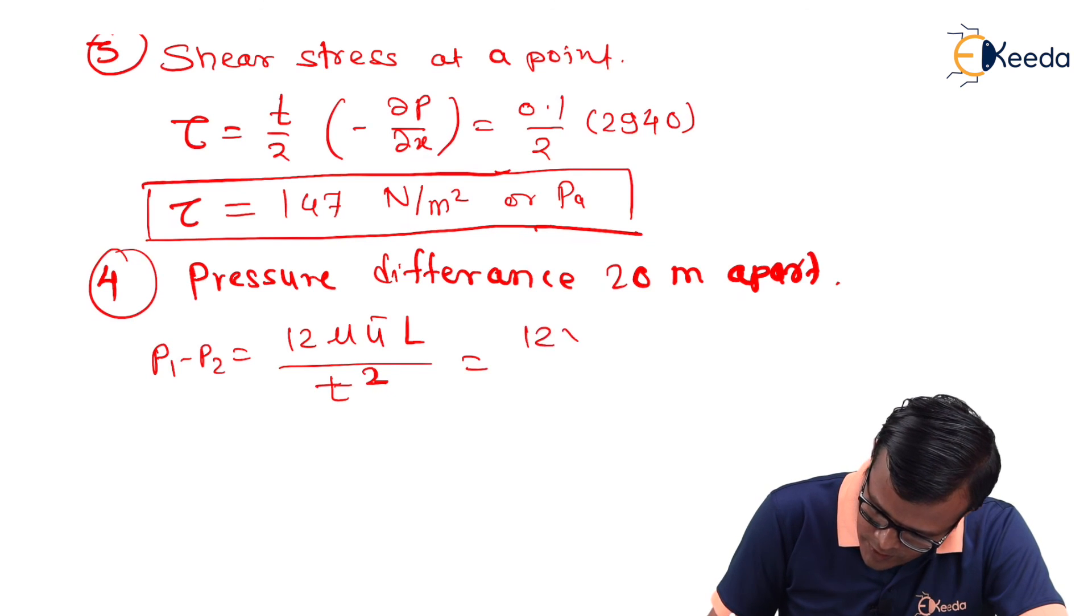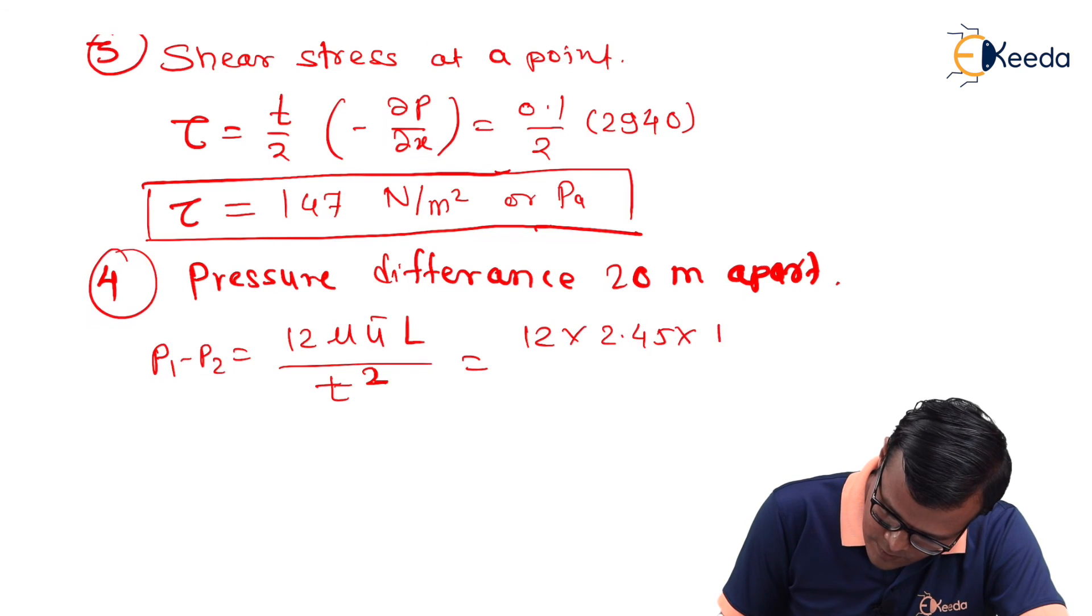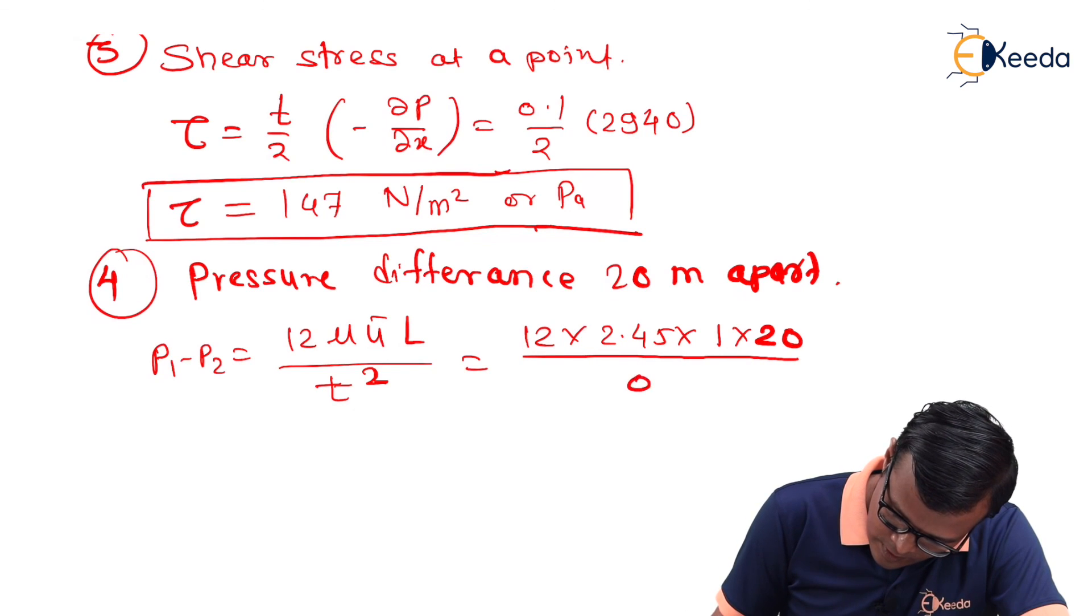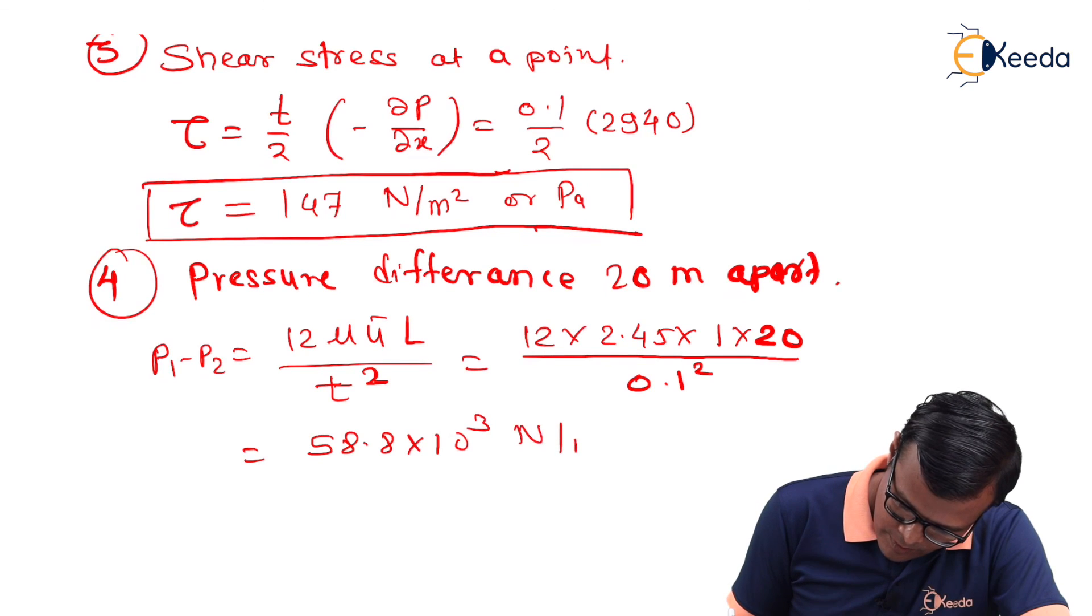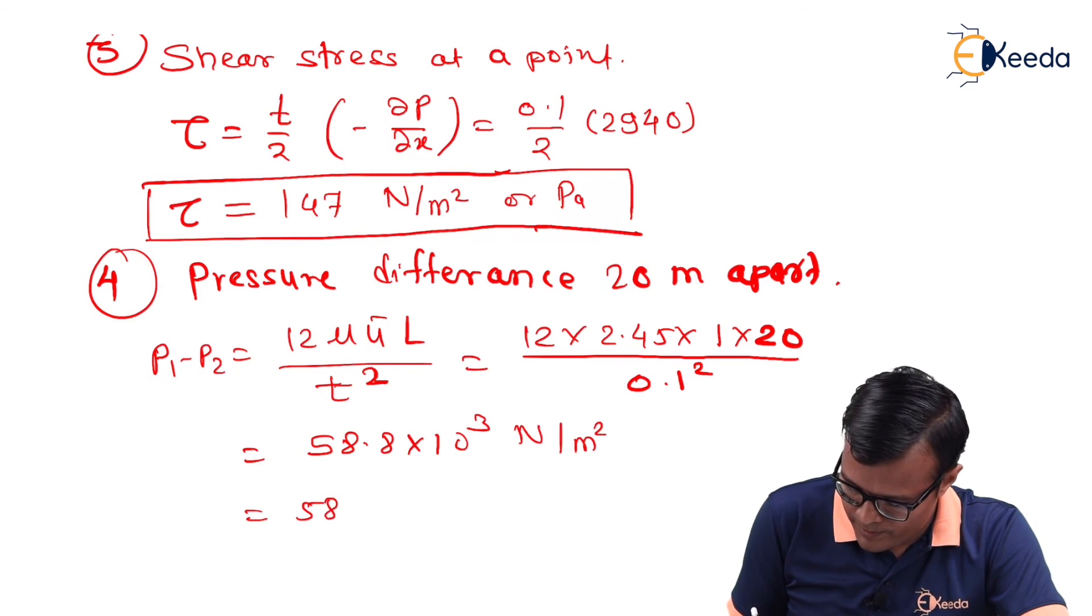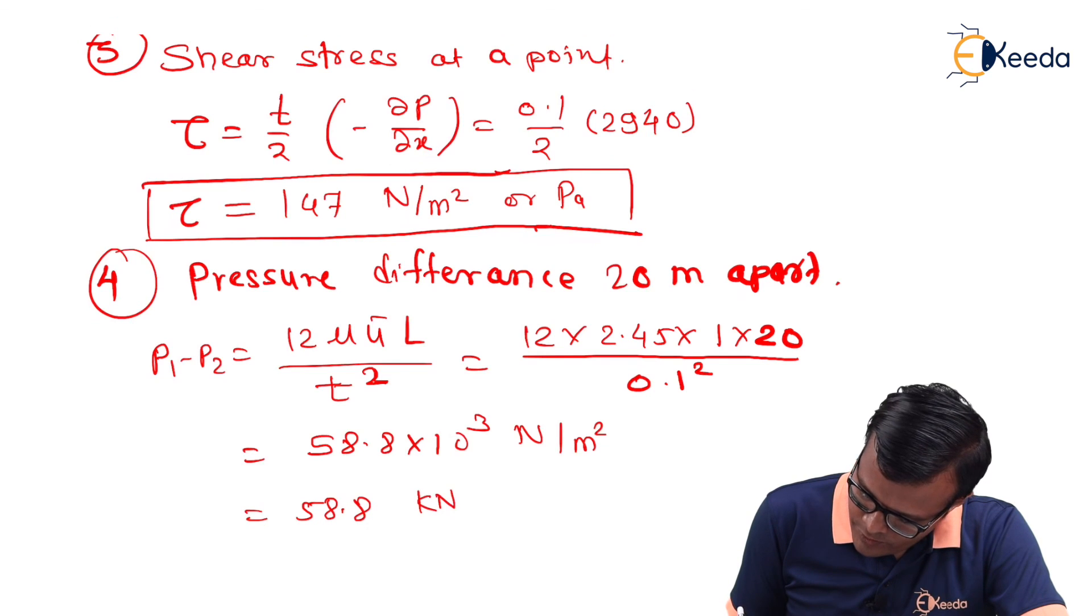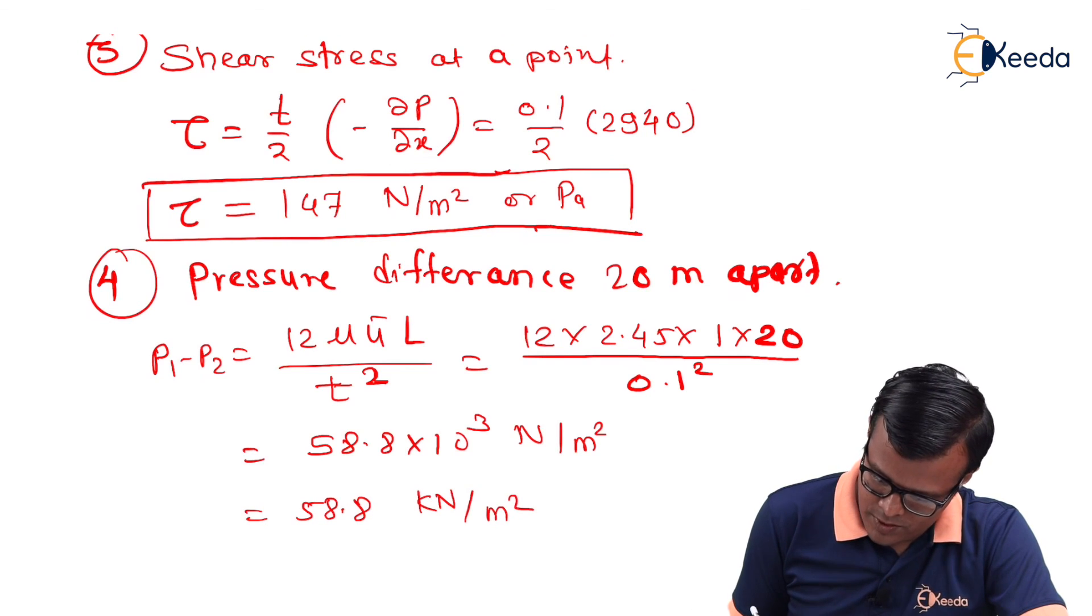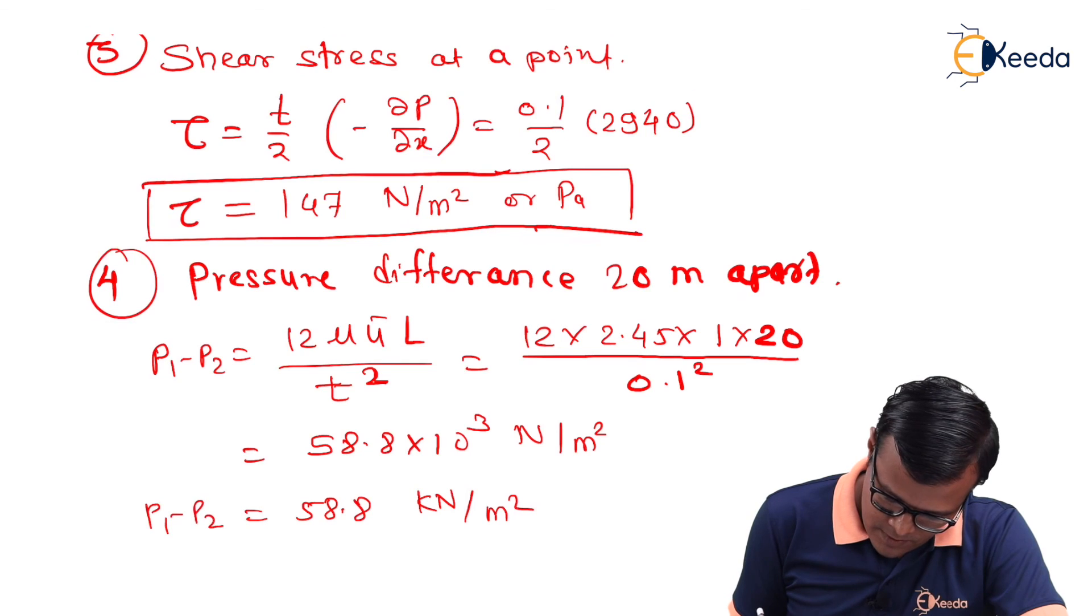So, 12 × μ is 2.45 × ū bar is 1 × L is 20 / thickness is 0.1². That will be equal to 58.8 × 10³ Newton per meter square. This 10³ can be absorbed by changing the unit. 58.8 kilonewton per meter square. This p₁ - p₂.